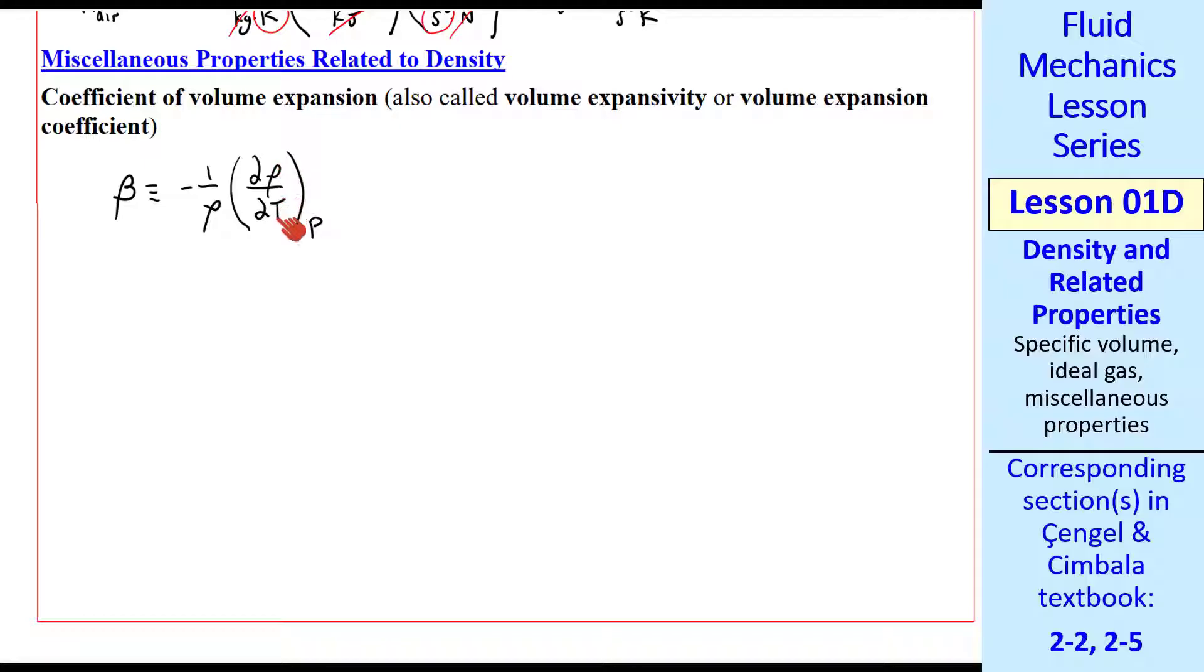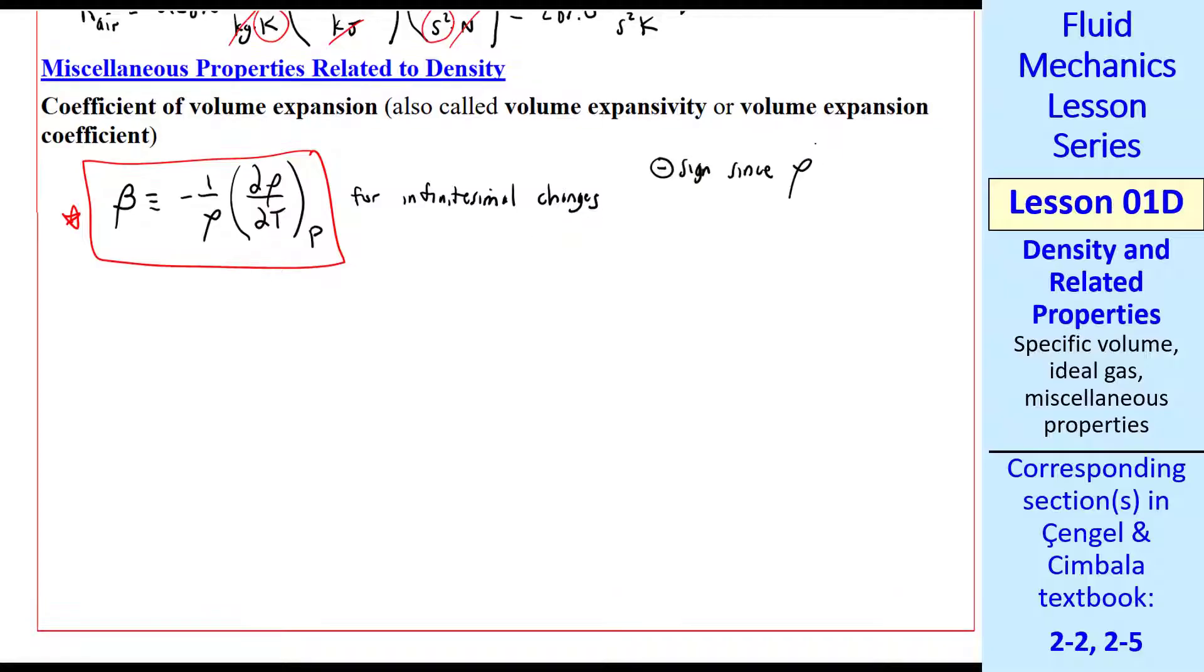That's the definition for infinitesimal changes in temperature and density. For finite changes rather than infinitesimal changes, we approximate beta as negative delta rho over rho delta T.